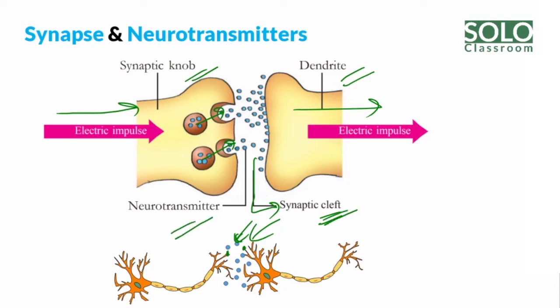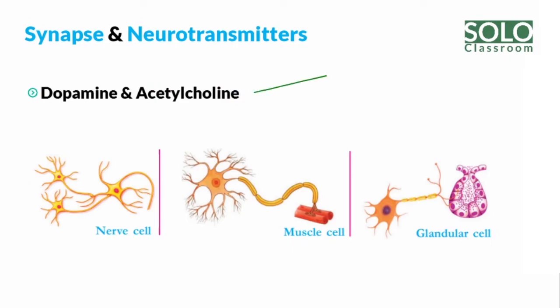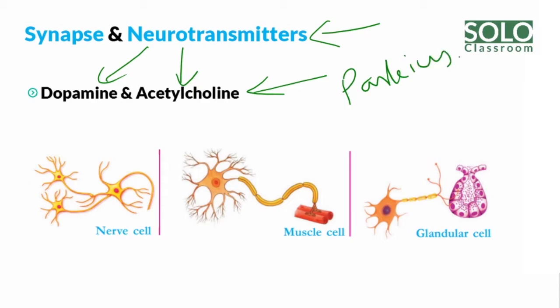Let's go over this. We call the chemicals in the middle of transmission between two neurons neurotransmitters. Two examples of neurotransmitters are dopamine and acetylcholine. We learn about dopamine in relation to Parkinson's disease.